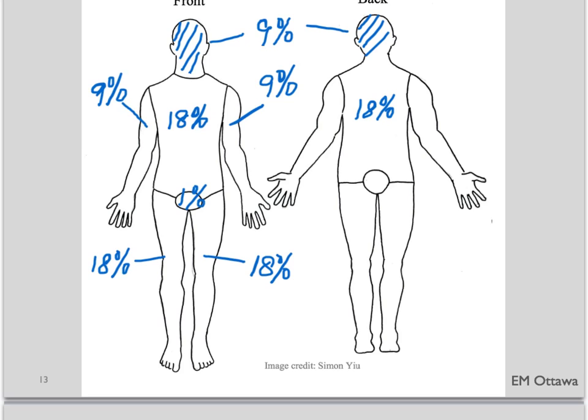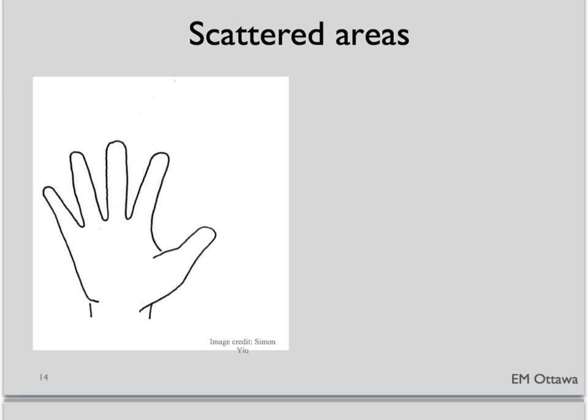This is a useful and commonly used rule to estimate burn area. If burn areas are scattered, we can use the patient's palm area as approximately 1% of body surface area, and use this to estimate the percentage burned.